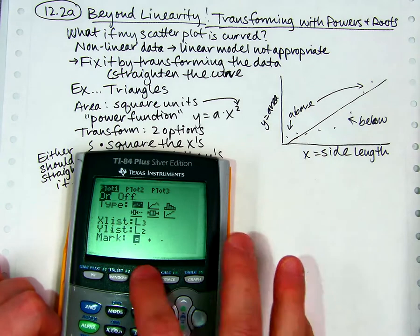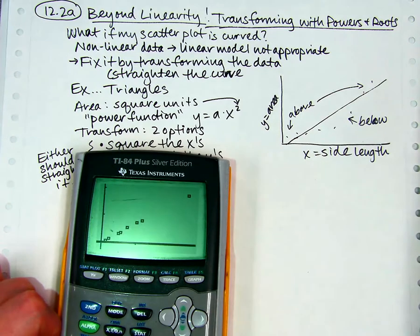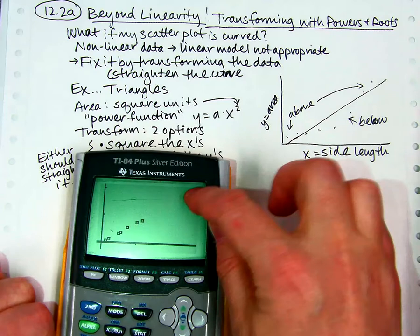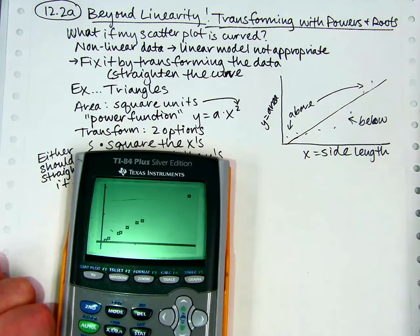I was like, that still looks curved to me. Okay, so now I'm going to do zoom 9. And it's straighter than before. So that straightened it quite a bit. Now it looks more like a straight line. If I did a new line of fit and a new residual plot, it would look much better.